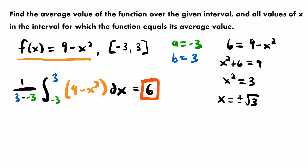We've solved for x and found two values where the function equals its average value. We must verify these are on our interval between negative 3 and positive 3. The square root of 3 is approximately ±1.7321, which is clearly between negative 3 and 3, so both values are on the interval. Therefore, x = ±√3 are the only two values where this function equals its average value of 6 on this closed interval.